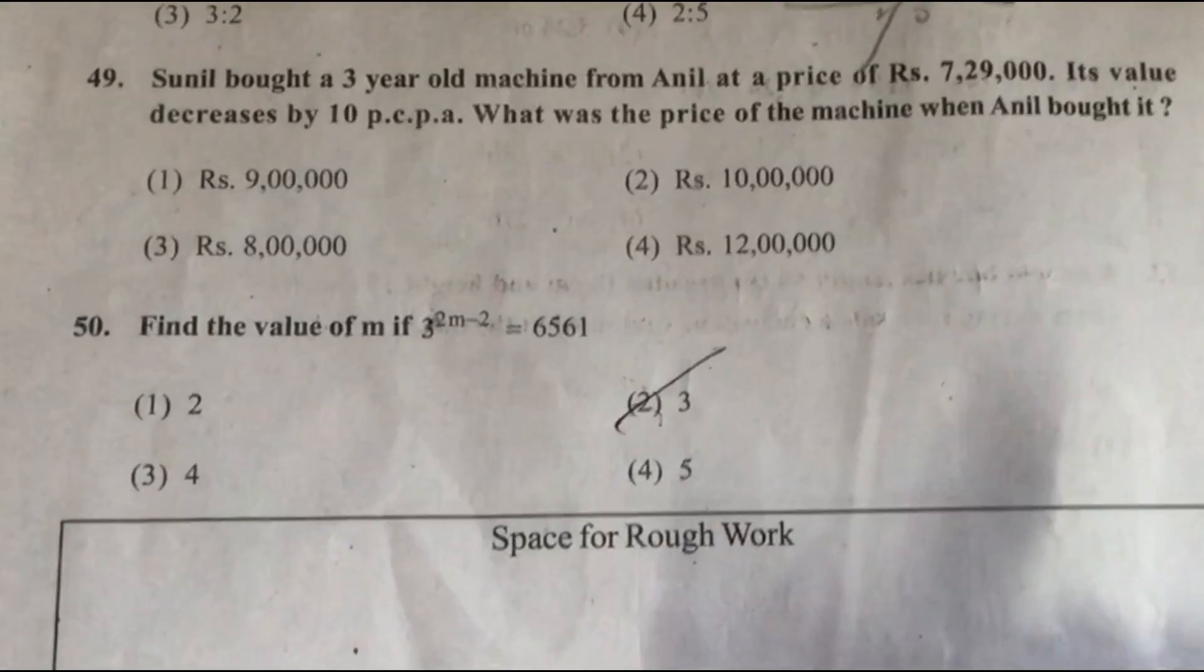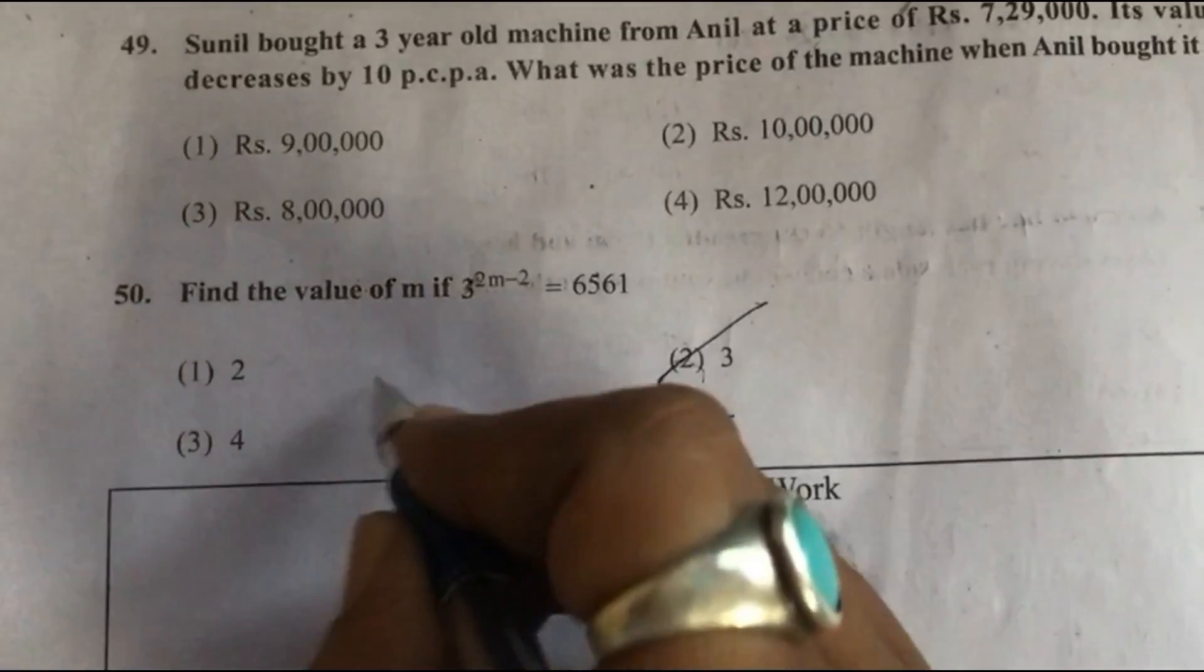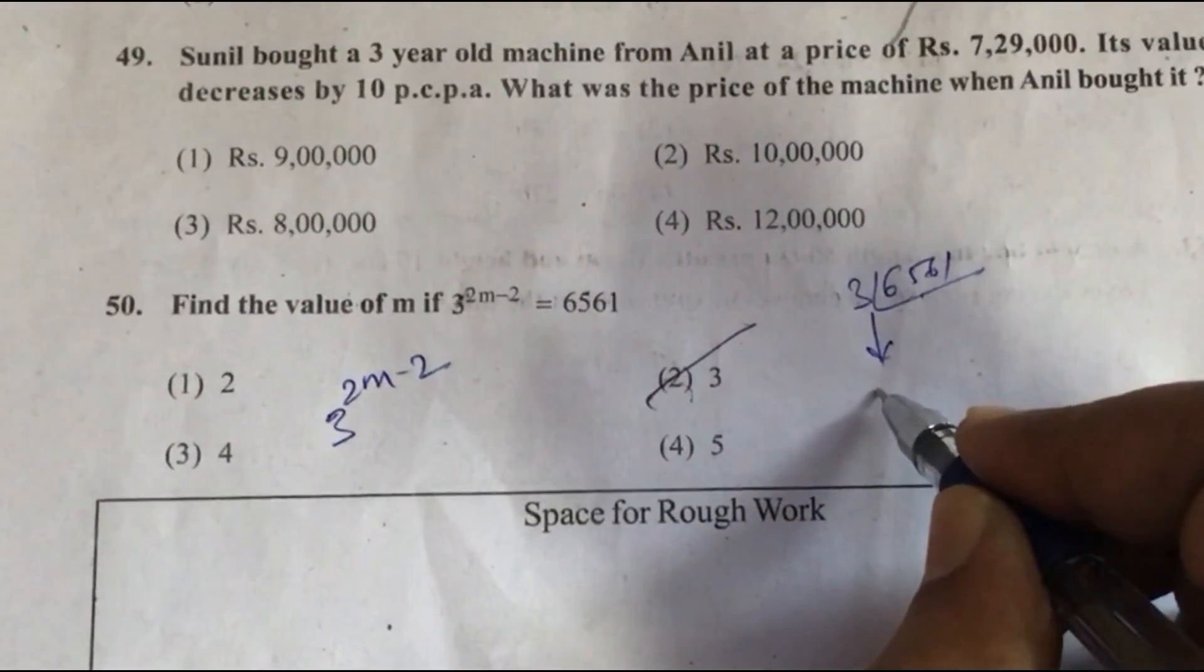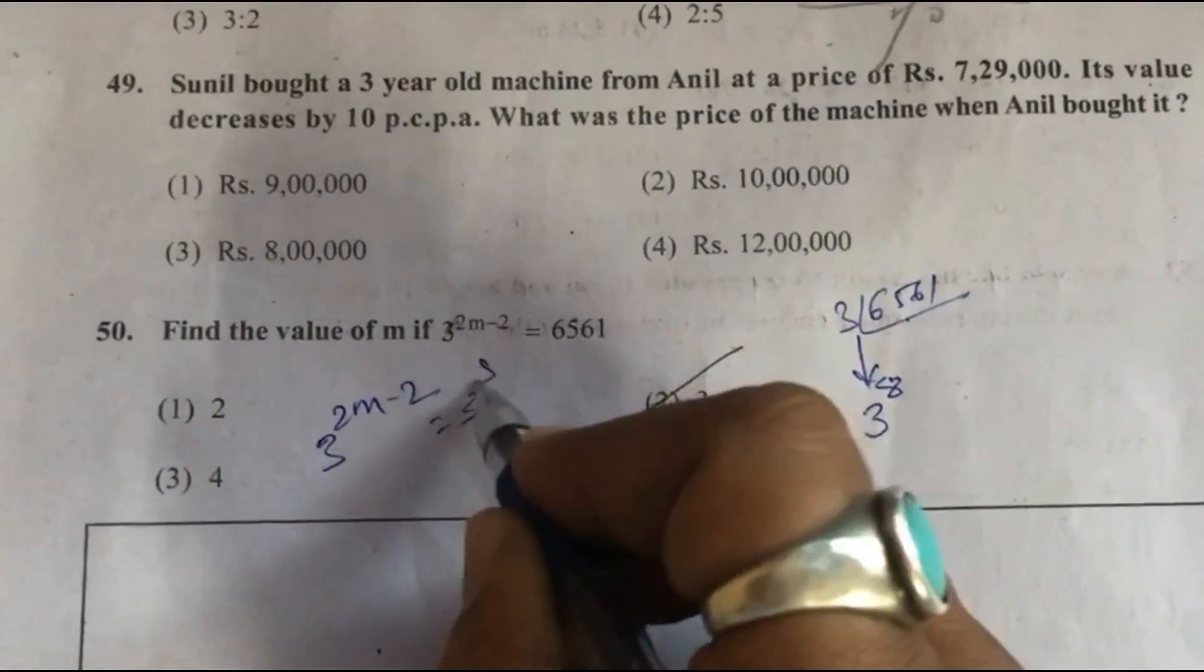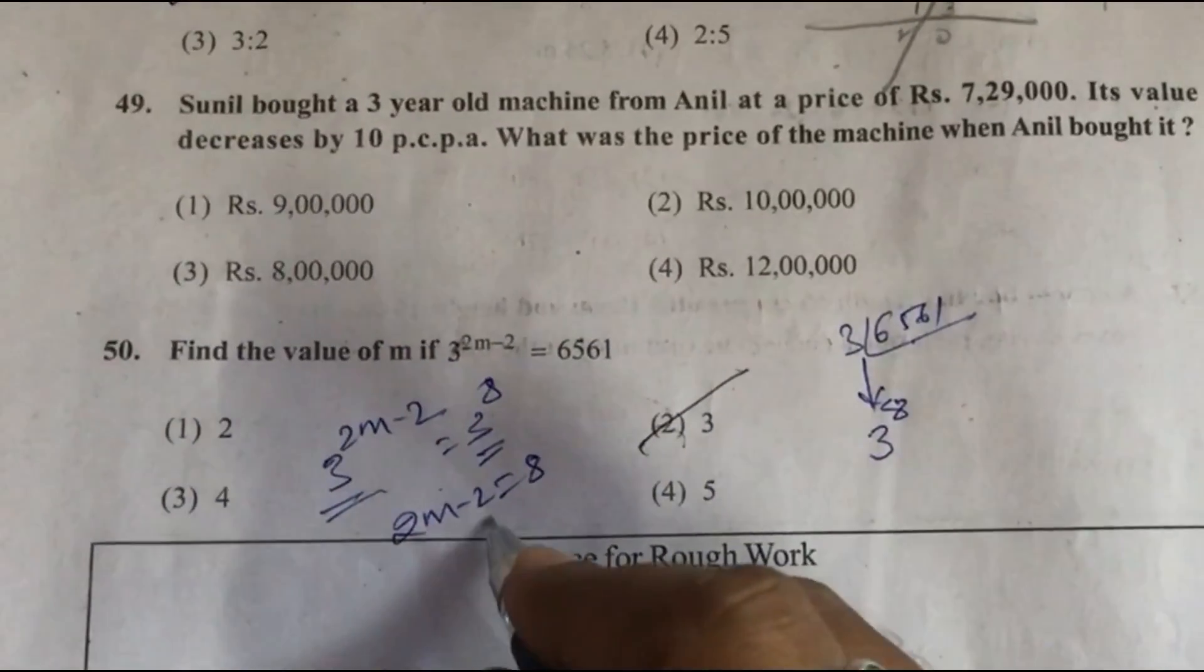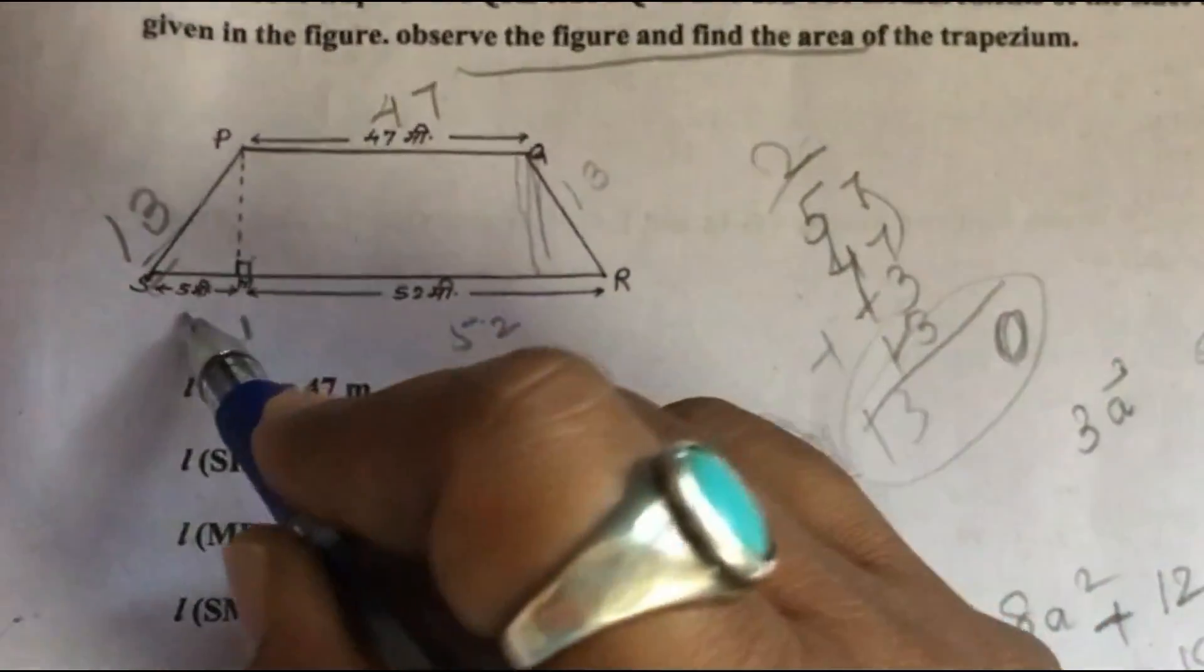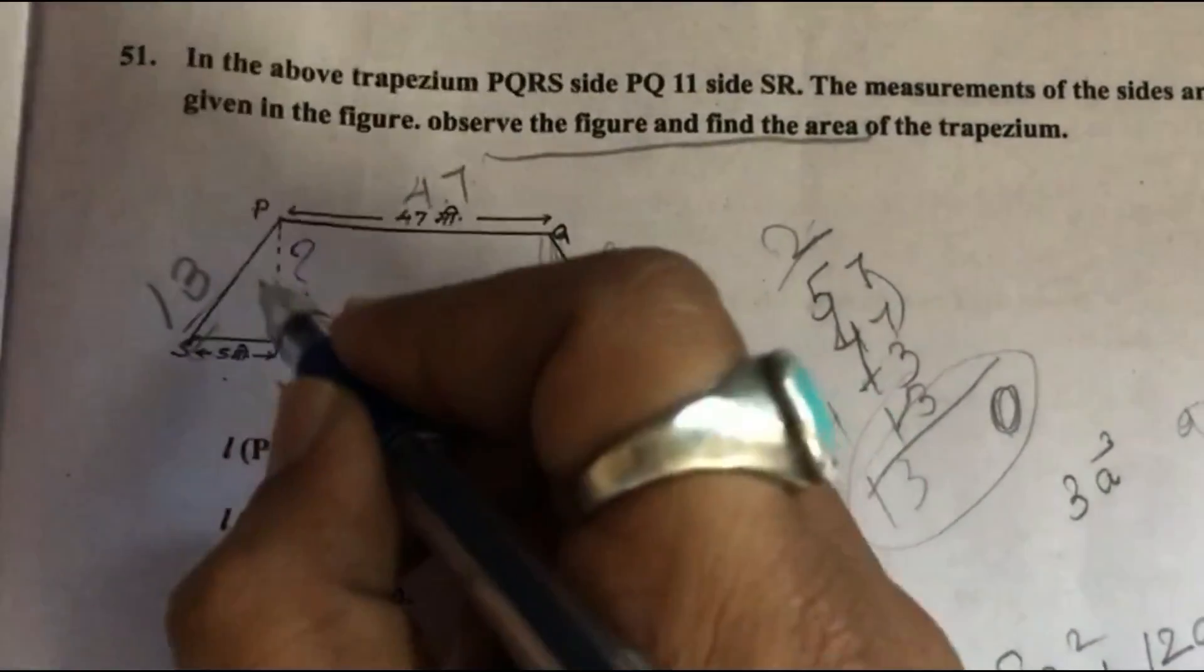Question 50: Find the value of m if 3 times 2 raise to m minus 2 equals 6561. 3 times 2 raise to m minus 2 equals 6561. By factorization, we can find the value of m.